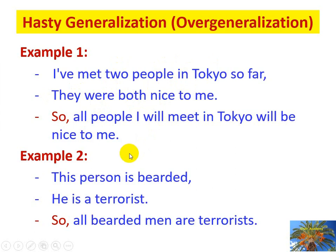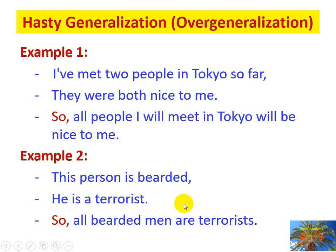Another example: 'This person is bearded — he's a terrorist; therefore, all bearded men are terrorists.' We cannot generalize like this — it is overgeneralization. Your conclusion is supported by only a few cases during the induction process. To generalize correctly, you must build your generalization upon complete or nearly complete induction of all individuals in any situation or phenomenon.